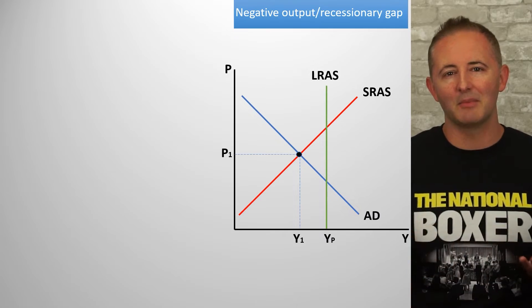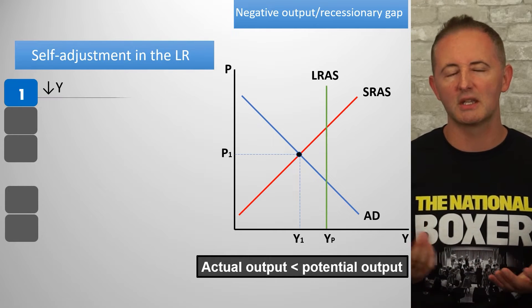In the next video, we'll discuss what happens if policymakers decide to take action. But for now, this is what it looks like when the economy is allowed to self-correct in the long run. We can do all of this again to see how an economy self-corrects from a recessionary gap, which was caused by a negative supply or negative demand shock — but we'll go through this one a little faster. It's the same logic and process, just in reverse.